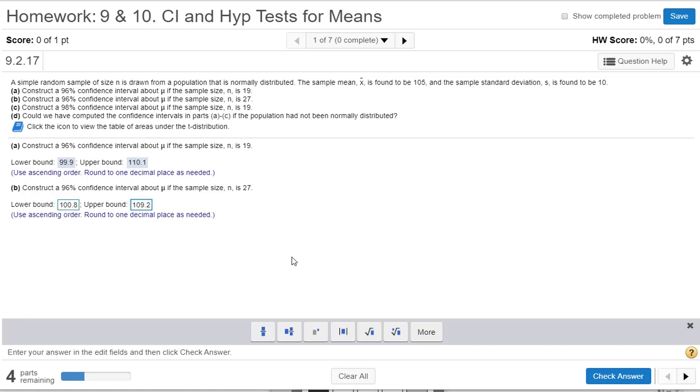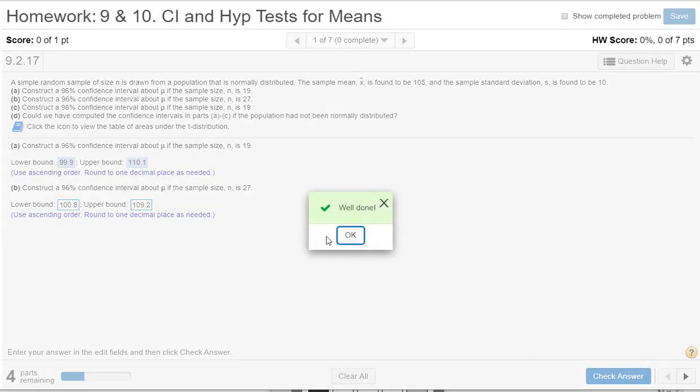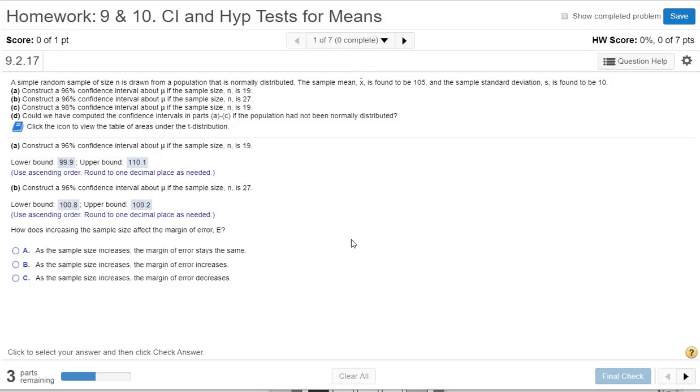So our interval actually became narrower as I increase the sample size. And we sort of should have expected that from all of our work we did with proportions earlier. So as the sample size increases, the margin of error decreases.